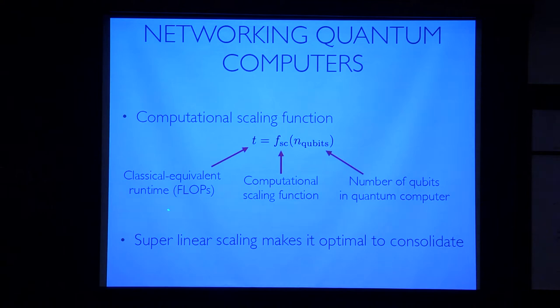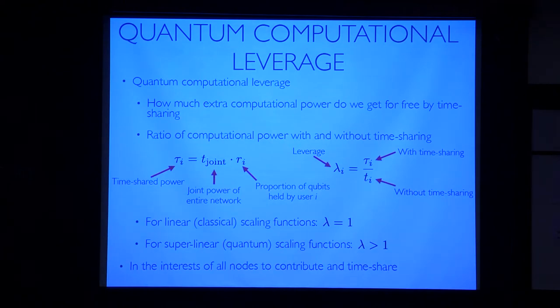So this might be like the flops or the classical equivalent runtime of the computation. And for classical computers this is approximately a linear function. For quantum computers it's almost always superlinear. And so what that means is that in general, if we go back to our earlier model of Alice and Bob with two computers of the same size, in the quantum environment it's always beneficial for them to conglomerate their resources and timeshare than it is for them to use their resources independently. So that's the key observation.